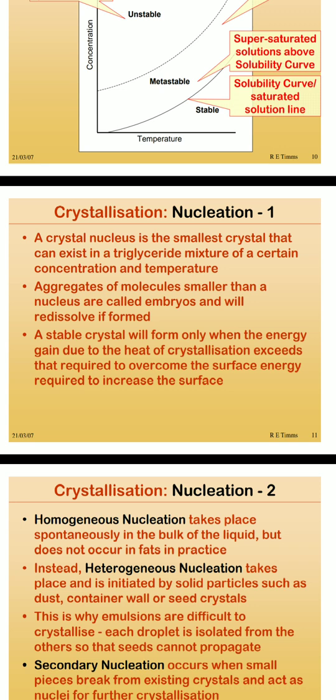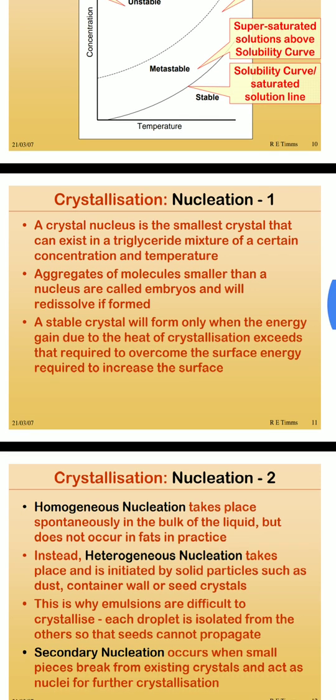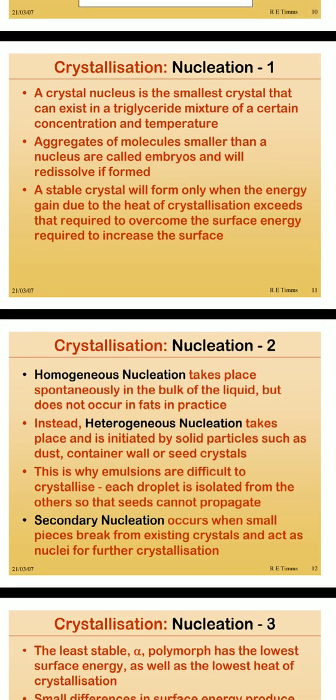Aggregates of molecules smaller than a nucleus are called embryos and will re-dissolve if formed. A stable crystal forms only when the energy gained due to the heat of crystallization exceeds that required to overcome the surface energy. Nucleation involves the mixing of nuclei and formation of a liquid. Homogeneous nucleation takes place spontaneously in the bulk of the liquid but does not occur in fats in practice. Heterogeneous nucleation is initiated by solid particles such as dust, container walls, or seed crystals. This is why emulsions are difficult to crystallize — each droplet is isolated from the others, so seeds cannot propagate.